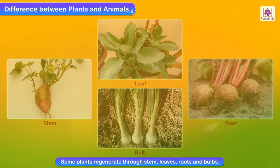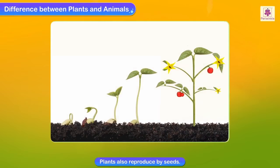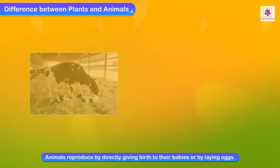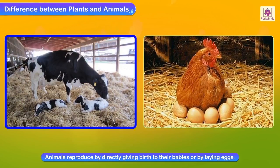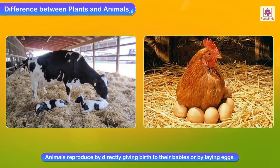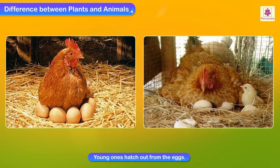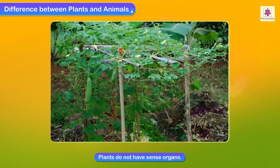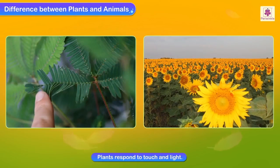Some plants regenerate through stems, leaves, roots, and bulbs. Plants also reproduce by seeds. Animals reproduce by directly giving birth to their babies or by laying eggs. Young ones hatch out from the eggs. Plants do not have sense organs like animals, but they do respond to touch and light.